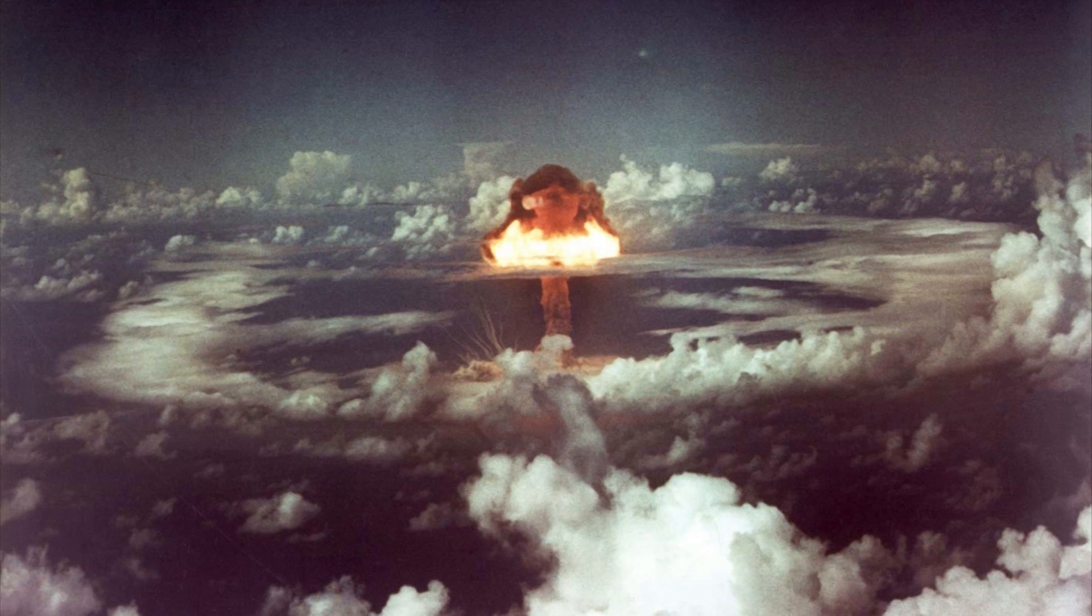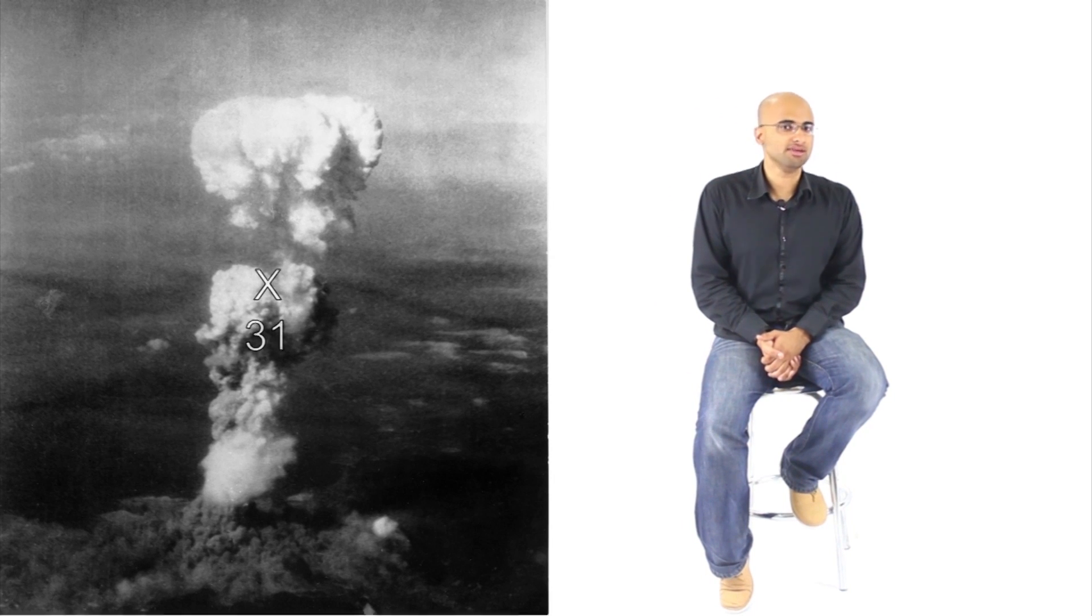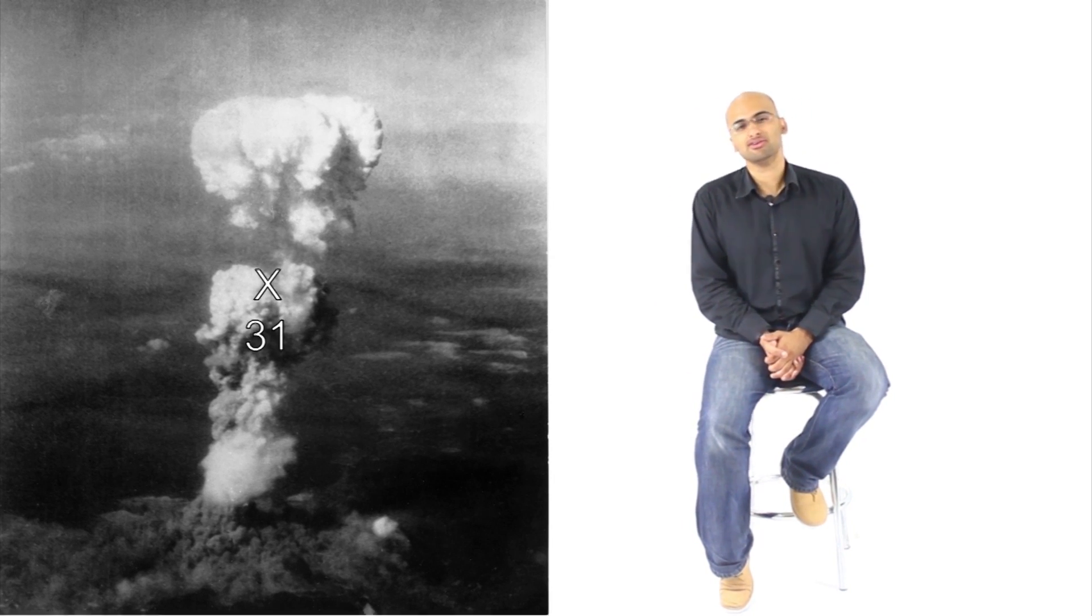However, the fission bomb is not the most powerful bomb. There is something even more powerful than that. The most powerful fission bomb ever detonated by the United States, tested by the United States, is called Ivy King. And it had an explosive yield of 500 kilotons worth of TNT. That's 500,000 tons worth of TNT. That's a lot, that is really a lot. That's 31 times more powerful than Little Boy, the bomb that was dropped on Hiroshima.